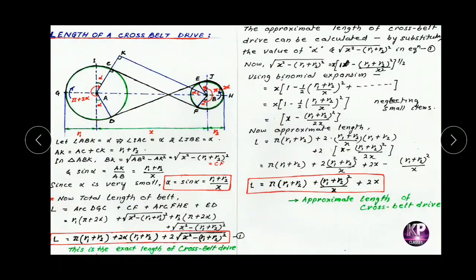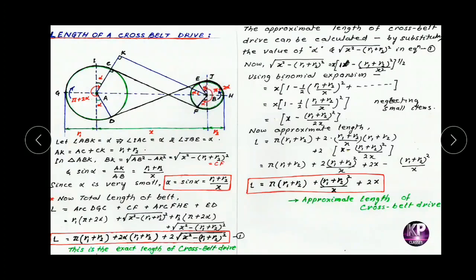Arc DGC equals R1 into (pi plus 2 alpha). CF equals BK, and we calculated that BK equals the square root of X squared minus (R1 plus R2) squared. Plus arc FHE, where radius equals R2 and angle of contact equals pi plus 2 alpha, giving R2 into (pi plus 2 alpha). Plus the square root of X squared minus (R1 plus R2) squared. This simplifies to pi(R1 plus R2) plus 2 alpha(R1 plus R2) plus 2 times the square root of X squared minus (R1 plus R2) squared. This is the exact length of the cross belt drive.